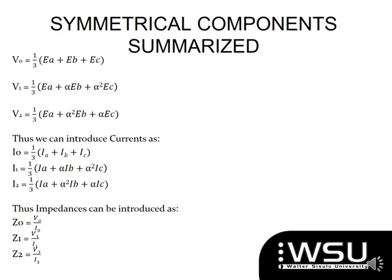This is again summarizing what we have learned, that my VN is a third into EA plus EB plus EC. My V1, a third into EA plus alpha EB plus alpha squared EC. And my V2 is a third into EA, alpha squared EB and alpha EC. Therefore, my currents will take exactly the same formulas as my voltages. You just represent them with a current. Then my impedance will always be my voltage divided by my current.